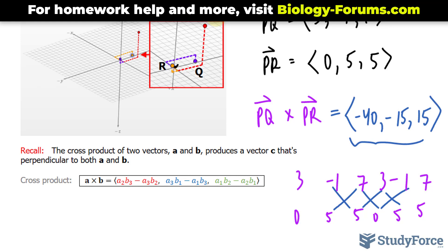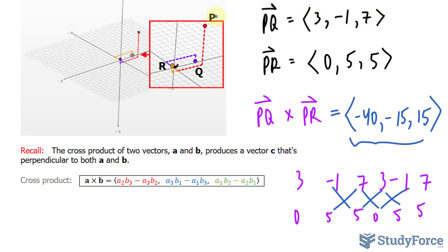Interestingly, if you multiply it by a non-zero scalar quantity, that vector, too, will be perpendicular. So I'm going to reduce this down. What number is equally divisible into all 3? The number 5.